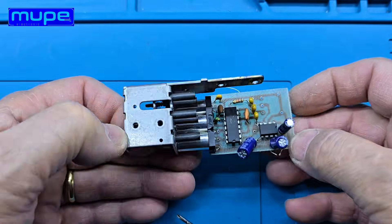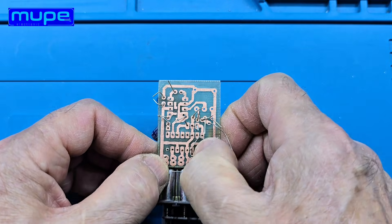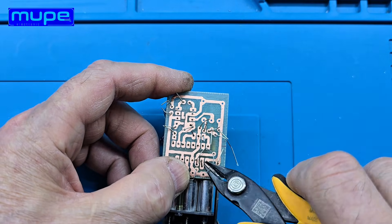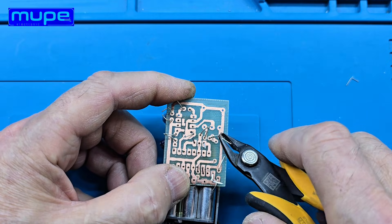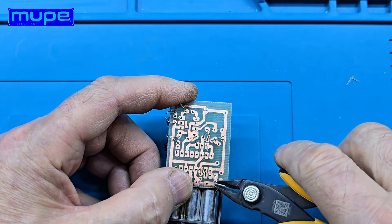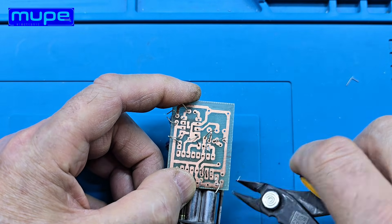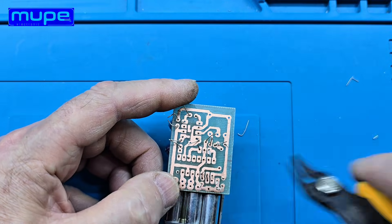I'm putting the permeability tuned coils together with the FM receiver board now. The ferrite-controlled coils handle the tuning, and the TA2003 takes care of all the RF and IF work. Piece by piece, it's turning into a clean, compact FM radio.